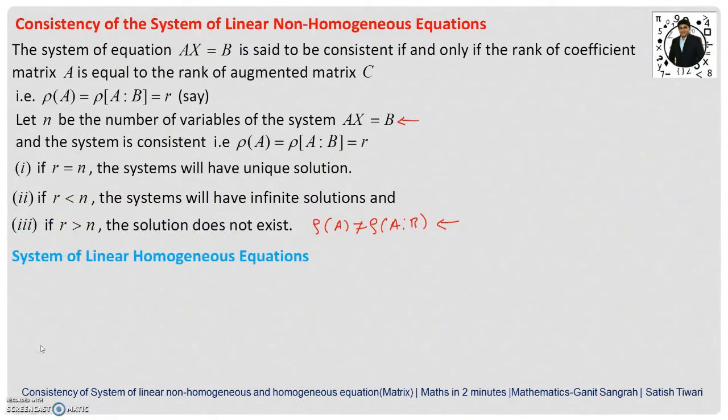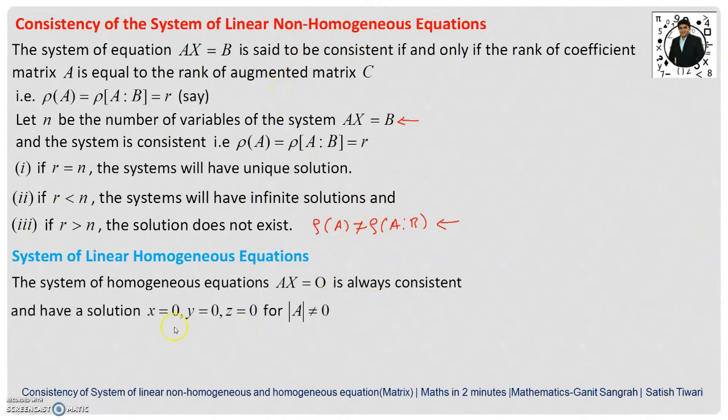Now, let us see the system of linear homogeneous equations. The system of homogeneous equation Ax equals 0, if you observe here, the RHS part is null matrix and the LHS part is same as that of the non-homogeneous equation. This is always consistent and has a solution x equals 0, y equals 0, z equals 0. That is, all the variables present in the system of equation will be 0.